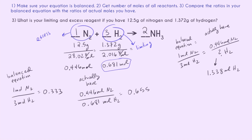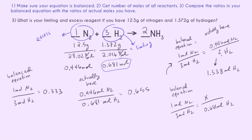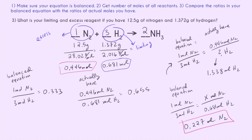We can find exactly how much N₂ we will use by setting up a ratio with hydrogen. If we completely use up our 0.681 moles of H₂, solving tells us we'd need 0.227 moles of N₂. We actually have 0.446 moles and only need 0.227 — another reason N₂ is the excess. We'd only need 0.227 moles to completely react with the hydrogen, but we have 0.446. Hope this video helped clarify limiting reagent problems for you. Happy studying.